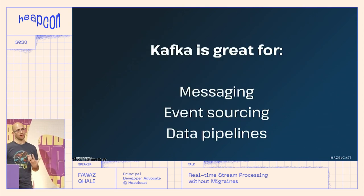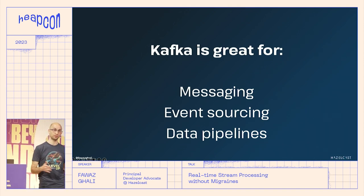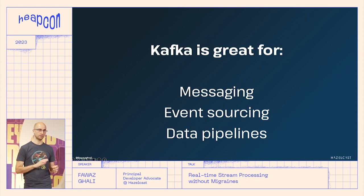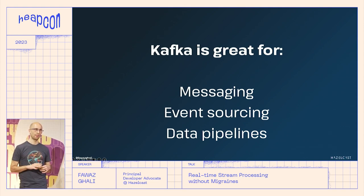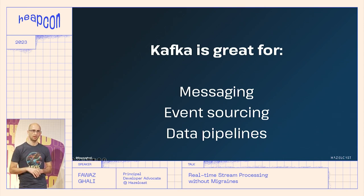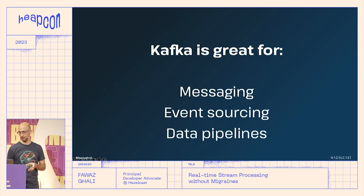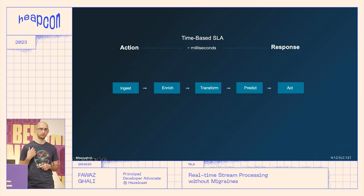We're going to use Kafka. Kafka is great for moving data from A to B or even doing some stream processing with Kafka Streams, but today we're using it differently. It doesn't have to be Kafka — it could be Kinesis or Apache Pulsar. You need a mechanism to move real-time data from point A to point B.